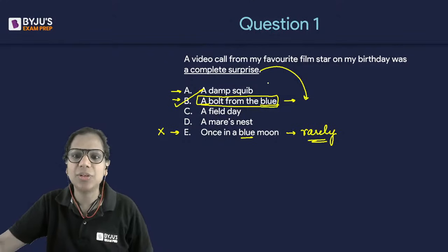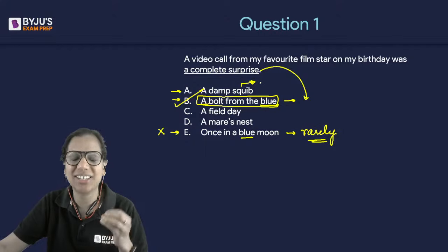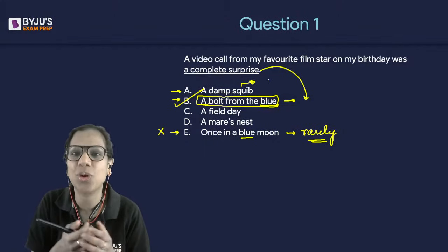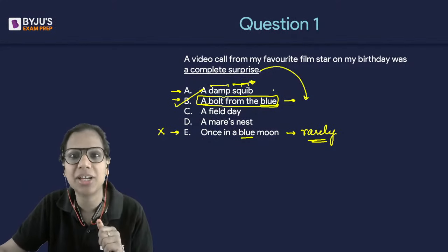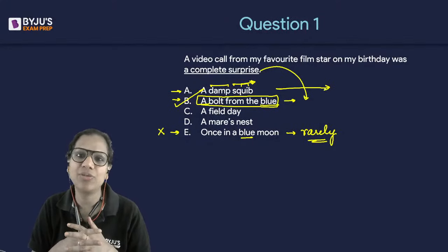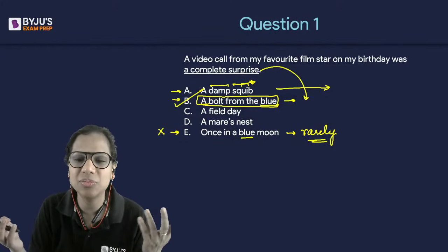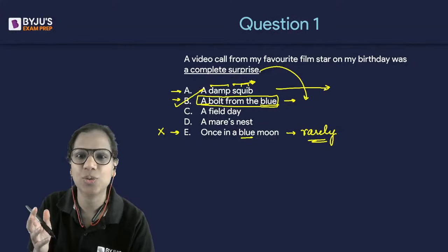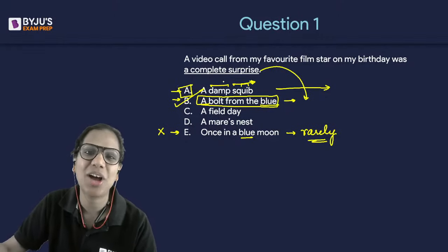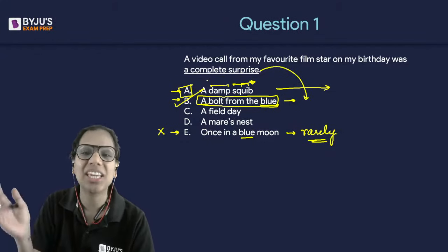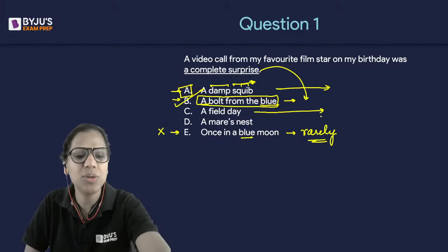Now, what is a damp squib? A squib is actually a firework that doesn't go off. We've all lit such fireworks in childhood that didn't quite go off as we wanted. A damp squib is a situation that turns out to be far less impressive than you imagined it to be. For example, if you go to a music concert with very high expectations but the singers are not in sync, that concert would be a damp squib — far less impressive than you imagined. And 'bolt from the blue' means complete surprise. Now, what is a field day?